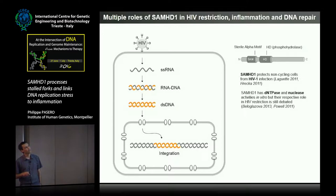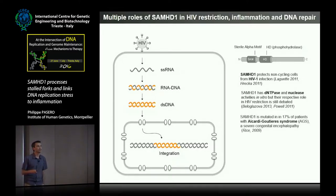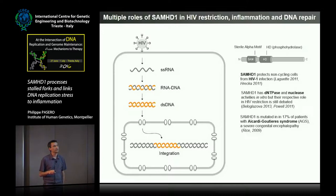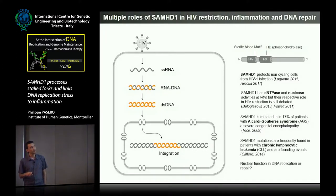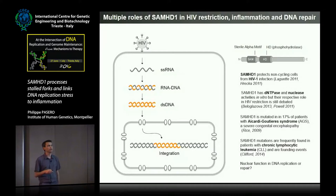What is also very interesting about this protein is that it's frequently mutated in Aicardi-Goutières Syndrome, which is a very severe congenital encephalopathy caused by a chronic induction of type 1 interferon. On top of that, SAMHD1 is frequently mutated in cancers, and it was shown in CLL that mutation of SAMHD1 can be the founding event leading to cancer development.